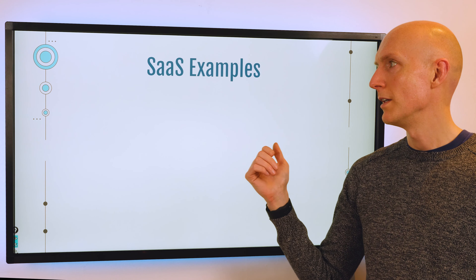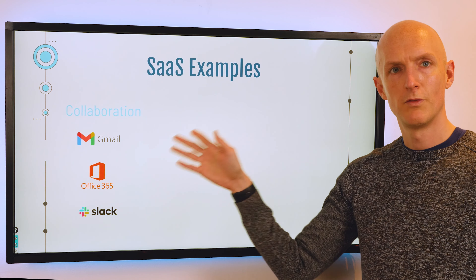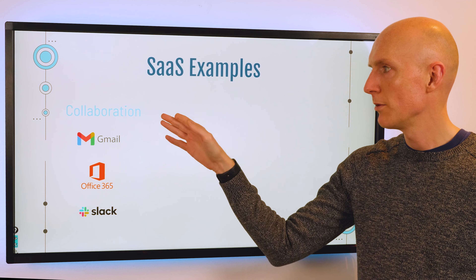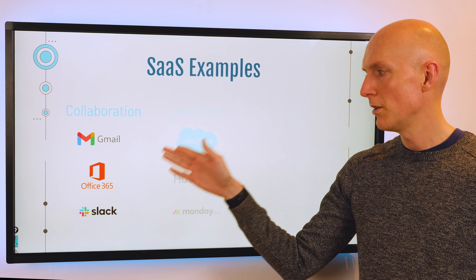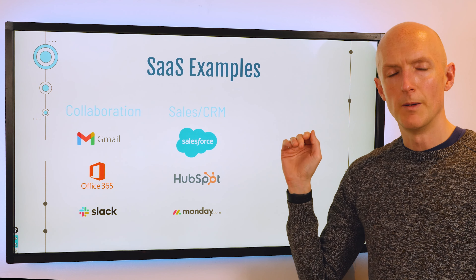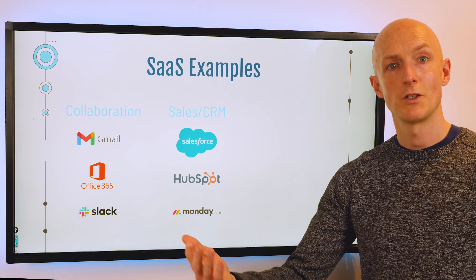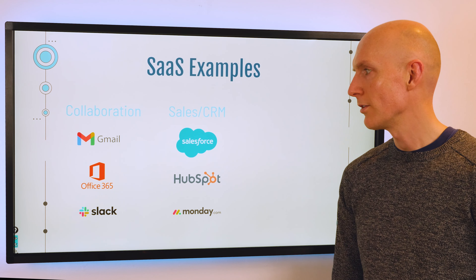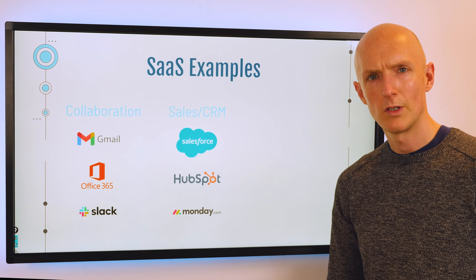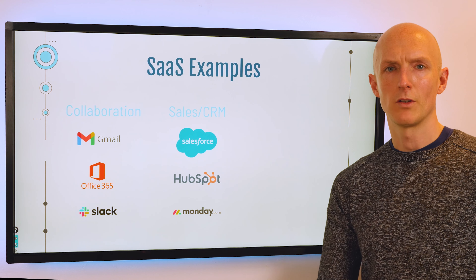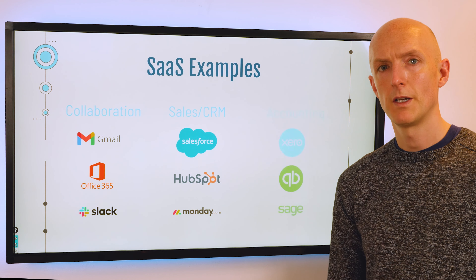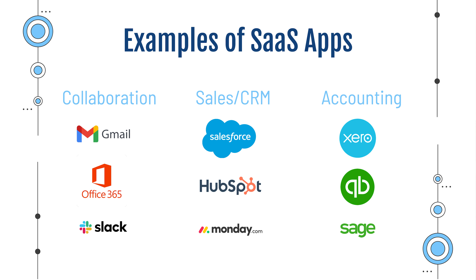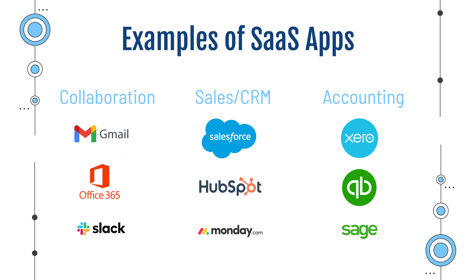In terms of some examples, in the collaborative space you've got things like Gmail, Office, and Slack, all charging a monthly or annual fee. In the sales and CRM space you've got Salesforce, HubSpot, and Monday.com. And in accounting you've got Xero, QuickBooks, and Sage.